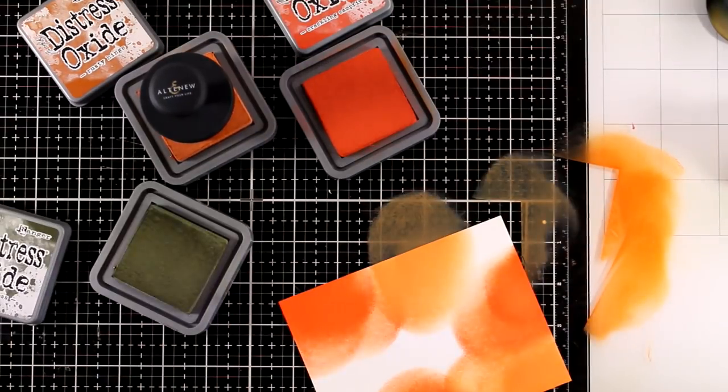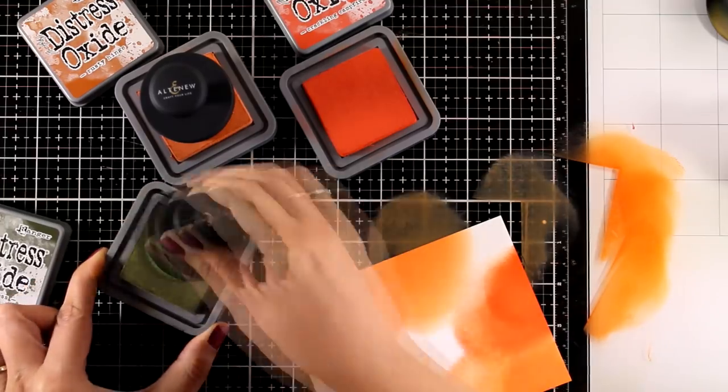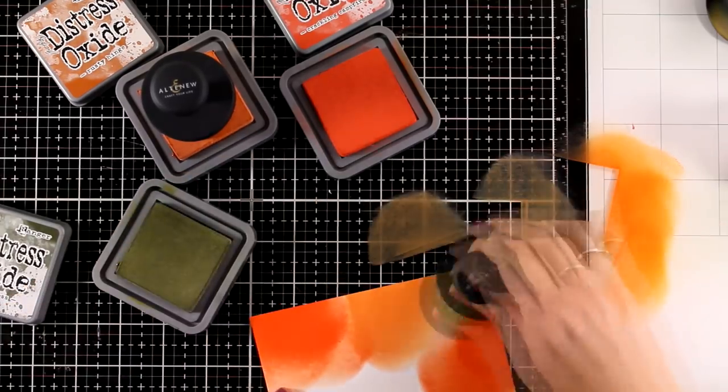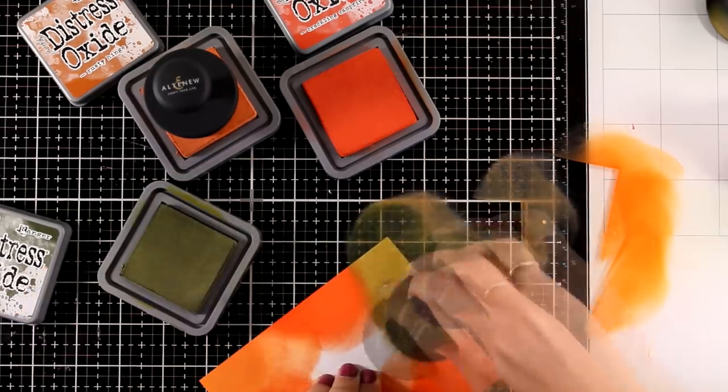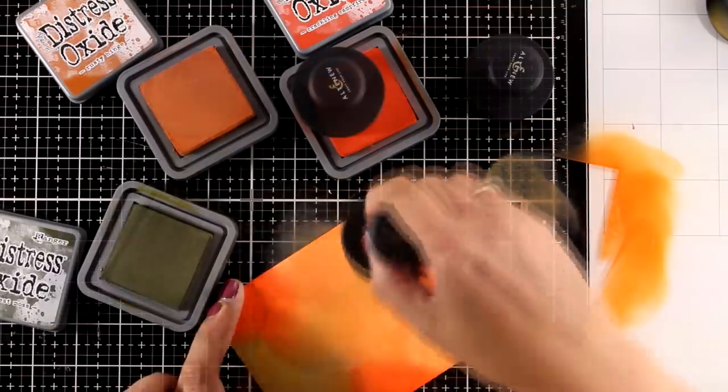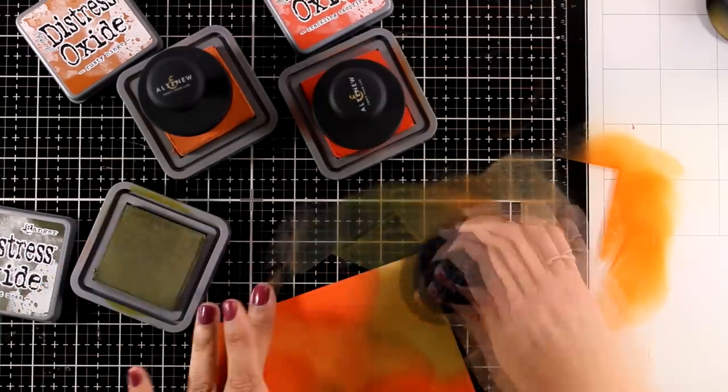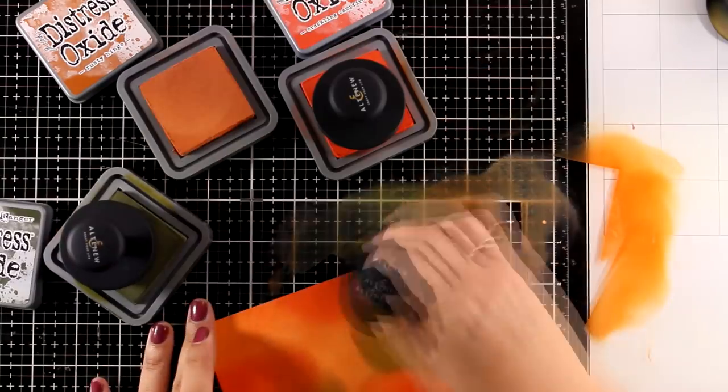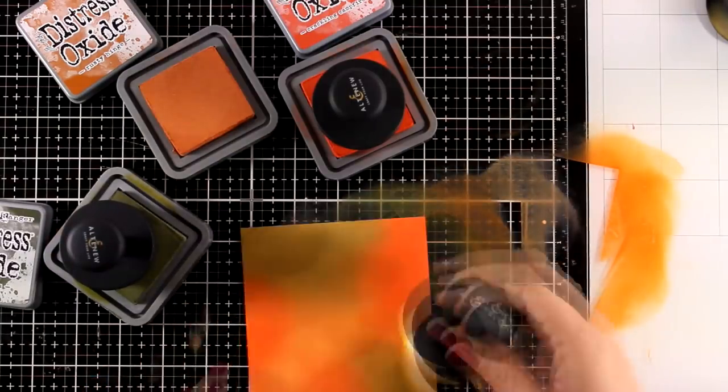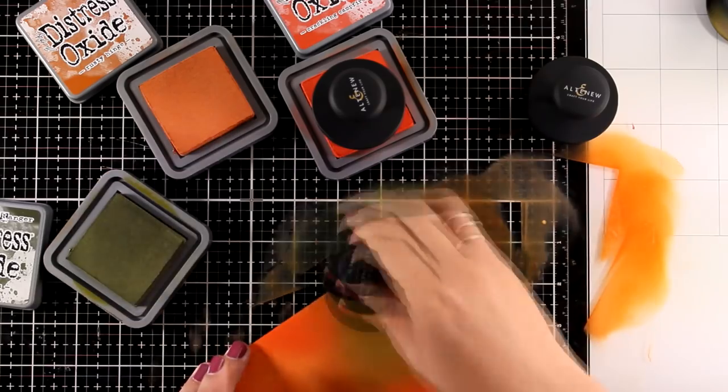The three colors that I used are Rusty Hinge, Crackling Campfire, and Forest Moss. In the beginning it's going to look like a mess but I was determined to make it work and you will see that it's going to blend nicely. The fun part about working with distress oxide ink is that the ink stays on top of the paper so it makes it really easy to blend.